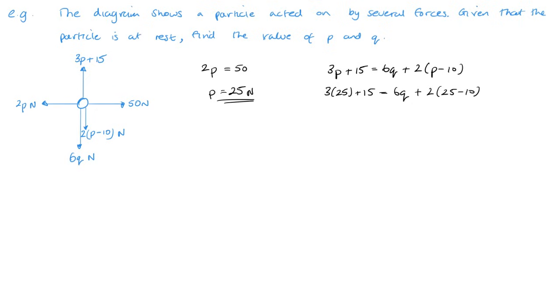So I've got 75 plus 15 is 90 equals 6q plus 25 take away 10 is 15 times by 2 is 30. So 6q equals 60, q equals 10 newtons. And that is as simple as that. Nothing too challenging about this, these type of questions just initially. I do promise they will get a little bit harder.